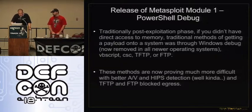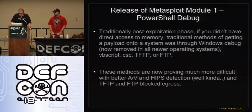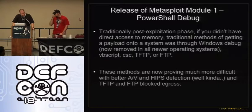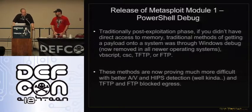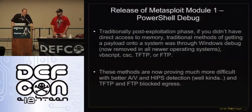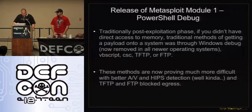So we're releasing a new Metasploit module called the PowerShell debug. It allows you to do the exact same thing, all through PowerShell. One thing I'd like to say: these PowerShell attacks — the Metasploit modules, the bypass, the reverse and bind shell — none of these are getting hit by AV or HIPS. It's a completely new attack vector that no one's really looking at, and you can basically get anything you want through the system.